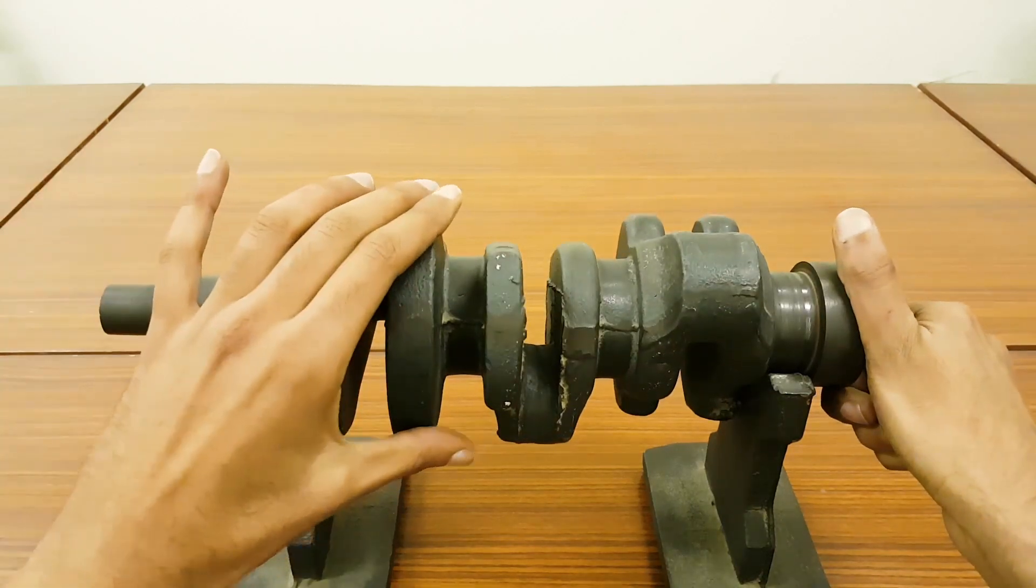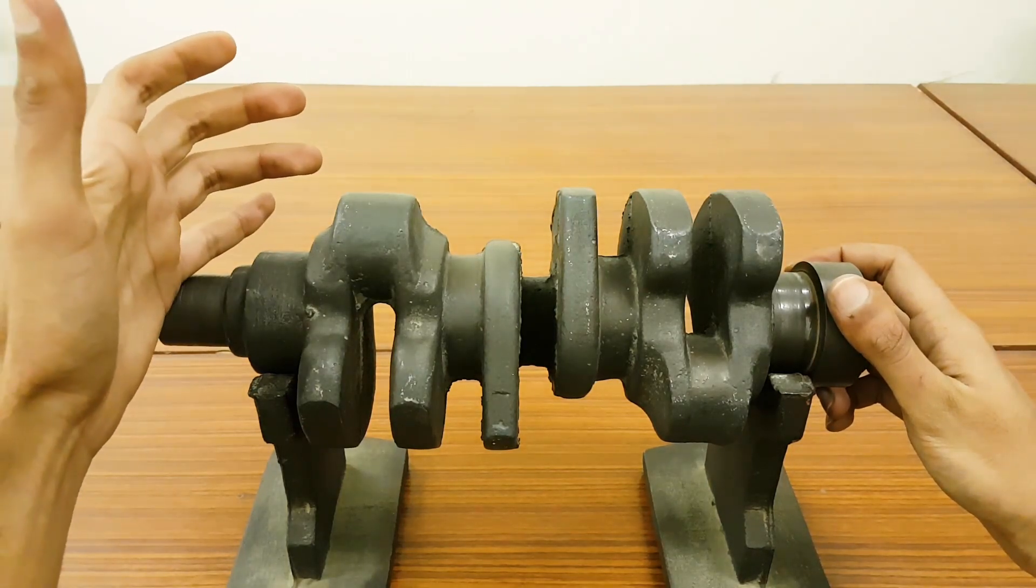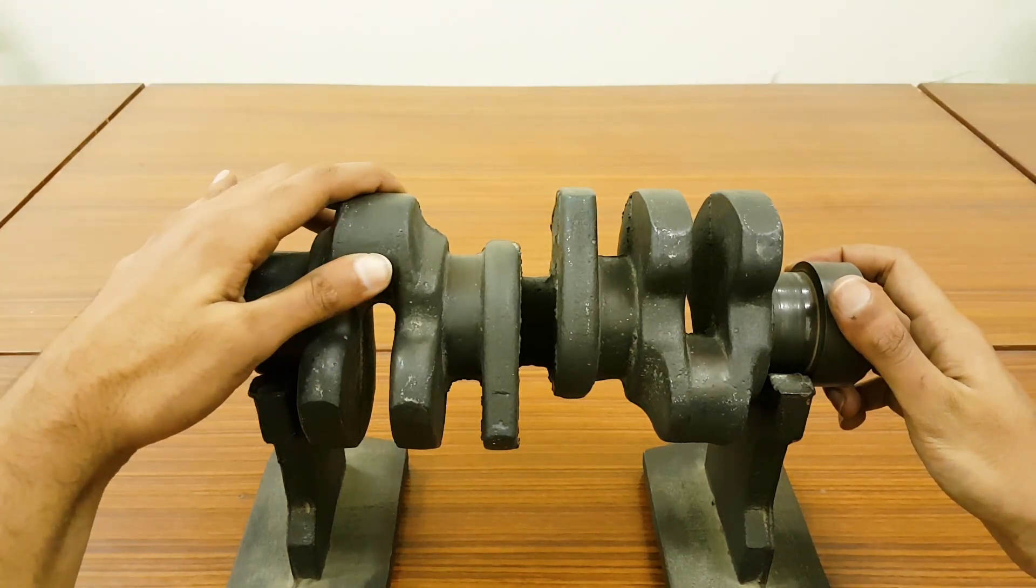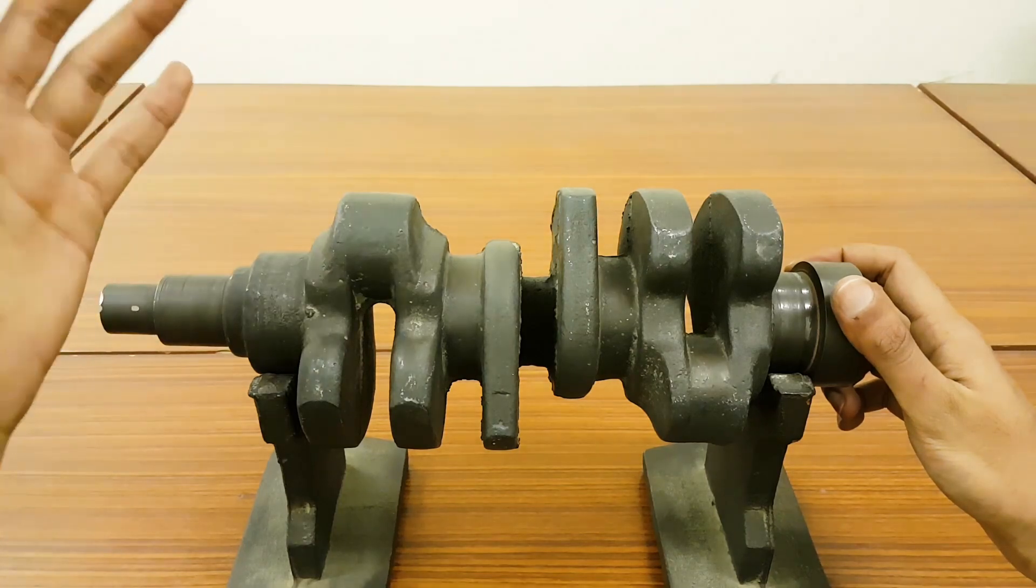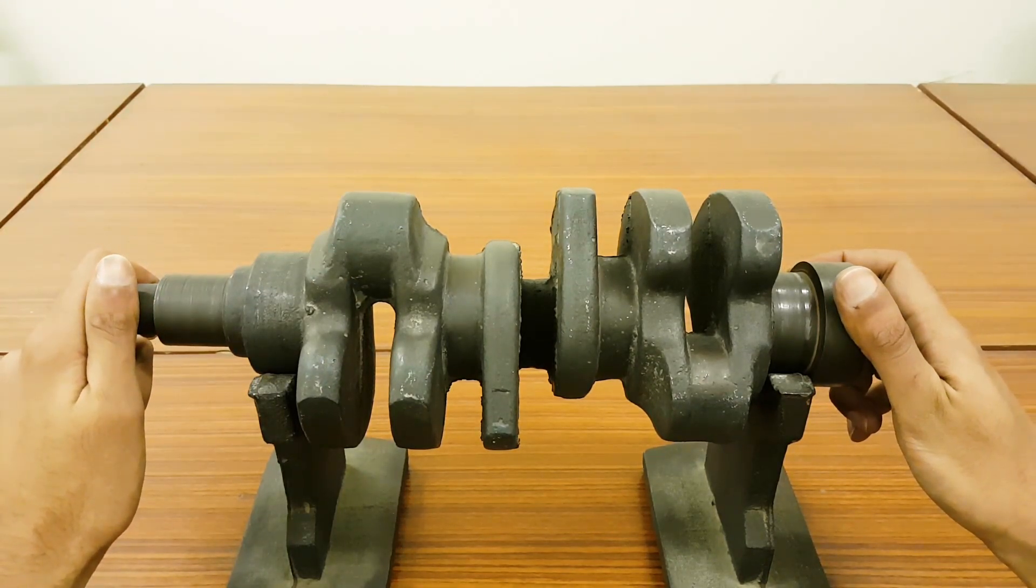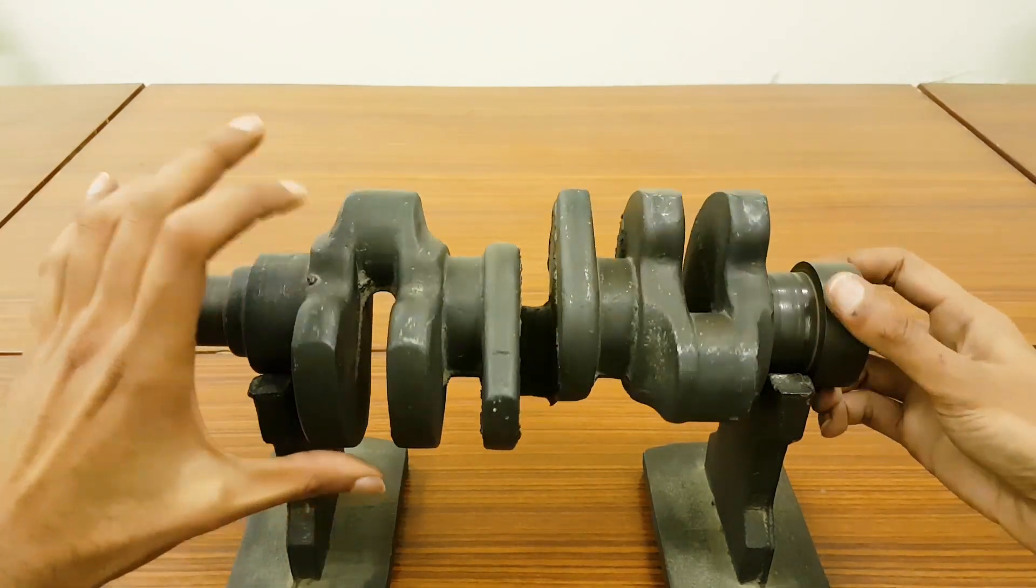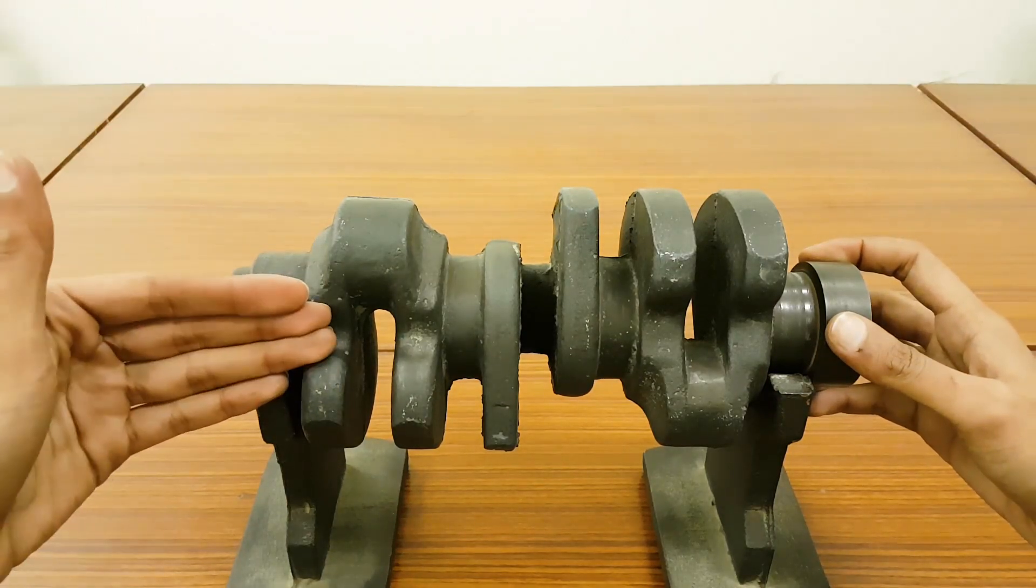There's one more thing important. You can see these web shapes, this is known as crankshaft web. As you know, connecting rod gets connected to the crank pin here, and on the connecting rod there's a piston, so both have a weight. To avoid vibrations we make these overweights on the counter side.